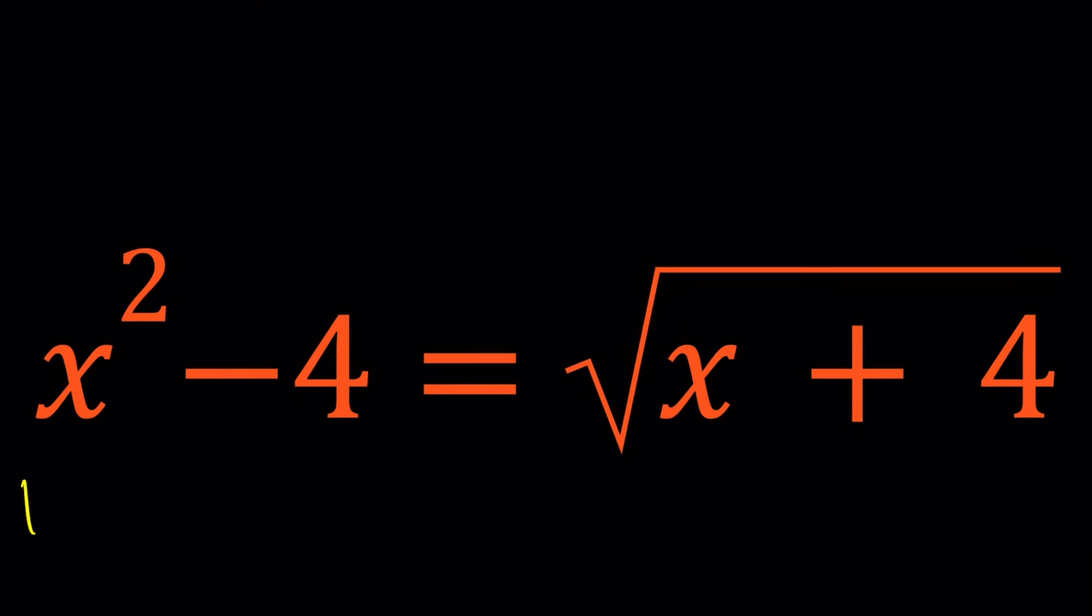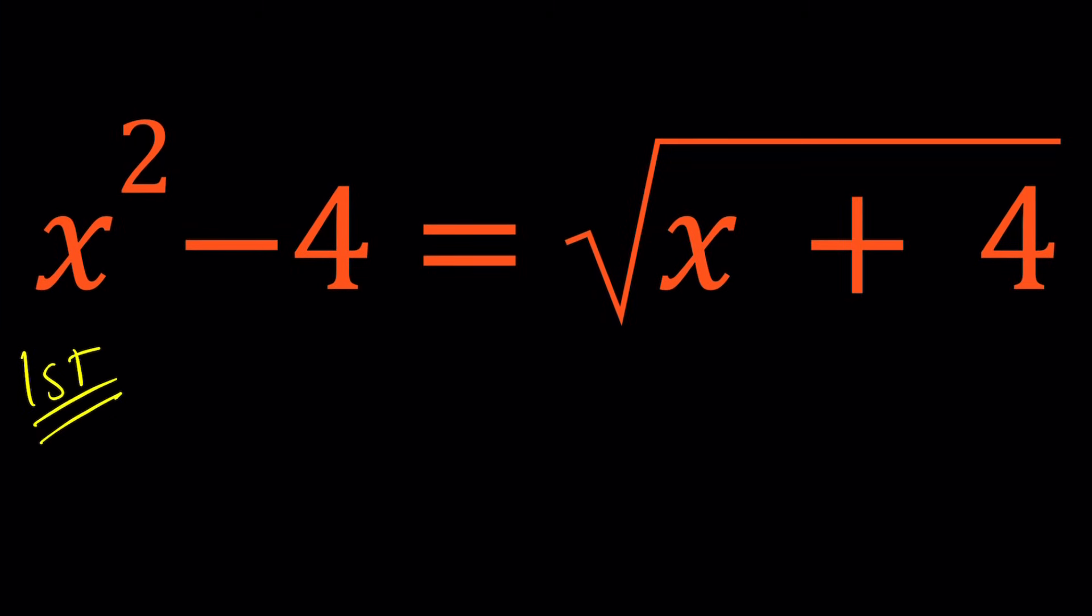And I'm also going to show you some graphs at the end. So for my first method, I would like to square both sides. My goal is to get rid of the radical and turn this into a quartic equation.